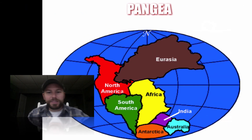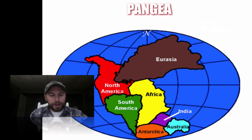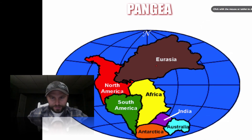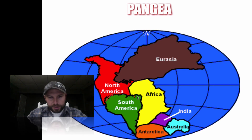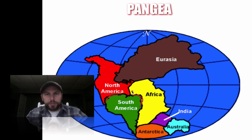This is Pangaea — the supercontinent that Alfred Wegener was talking about. We have Eurasia, North America, South America — notice how they're hooked together here. Africa and South America are hooked here too. The actual shapes of the continents look similar to what we see today.